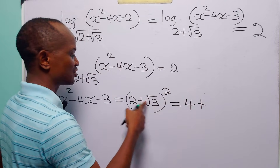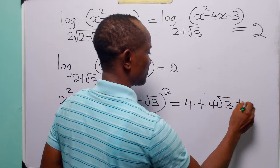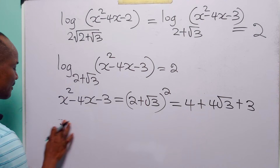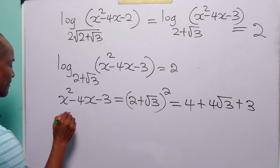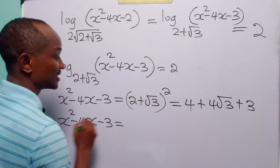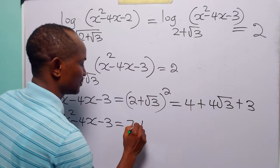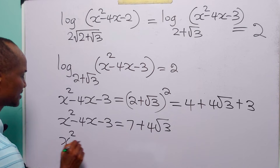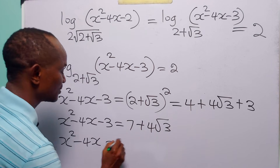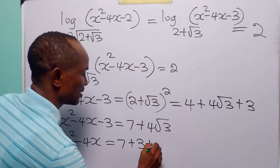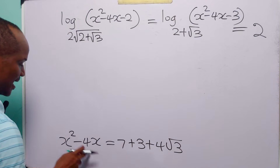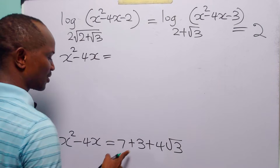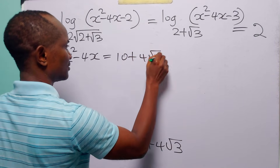Expanding (2 plus root 3)² gives 7 plus 4 root 3. So we have x² minus 4x minus 3 equals 7 plus 4 root 3. Rearranging, we have x² minus 4x equals 7 plus 3 plus 4 root 3, which gives x² minus 4x equals 10 plus 4 root 3.